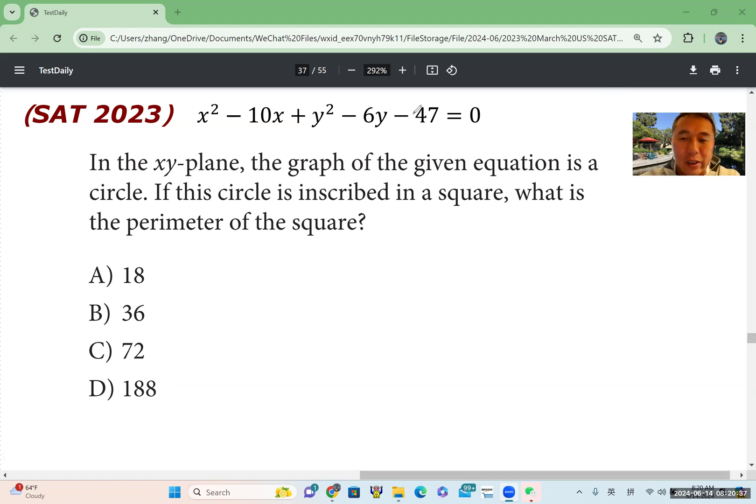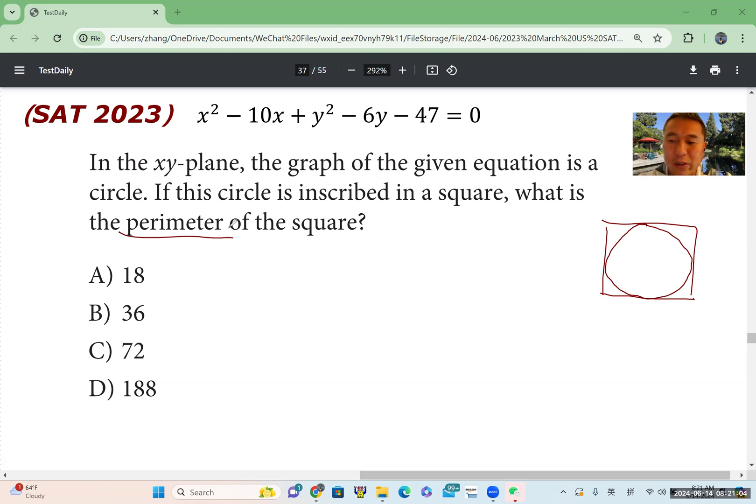Here is an equation in the xy plane, the graph of the given equation is a circle. If this circle is inscribed in a square, what is the perimeter of the square? So it's like this, right? Square, circle is inscribed. In order to find the perimeter of the square, we need to know the diameter or radius of the circle.